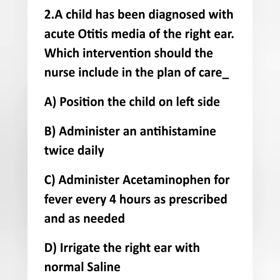Next question — second question: a child has been diagnosed with acute otitis media of the right ear. Which intervention should the nurse include in the plan of care? Options: A) position the child on the left side, B) administer an antihistamine twice daily, C) administer acetaminophen for fever every four hours as prescribed and as needed, D) irrigate the right ear with normal saline.